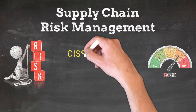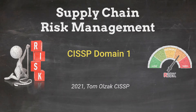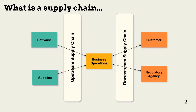In this lesson, we expand risk management beyond our network perimeter to the supply chain. There are two types of supply chains: upstream and downstream. The downstream supply chain consists of customers and other private and public entities that receive products, services, or regulatory reports. They are essential in business continuity planning, but we focus on upstream supply chain risk in this lesson.